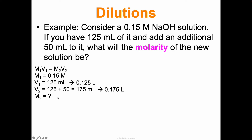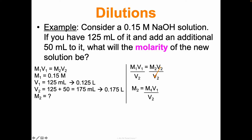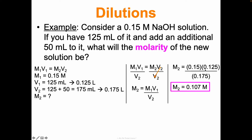Let's figure out the new molarity. M1V1 = M2V2 - I want to get M2 by itself, so I divide both sides by V2, giving M2 = (M1 × V1) / V2. Now I plug in: M1 is 0.15, V1 is 0.125 liters, V2 is 0.175 liters. Multiply across the top and divide: 0.15 times 0.125 divided by 0.175 gives 0.107 molar.